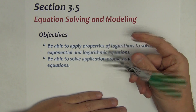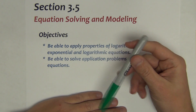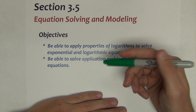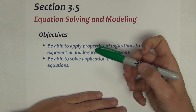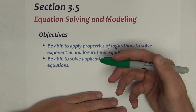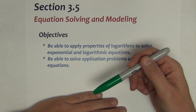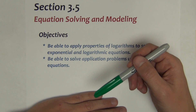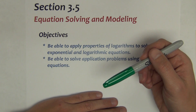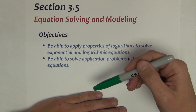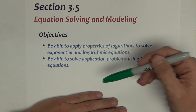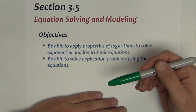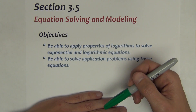Section 3.5 is the last section of Chapter 3 we're going to cover this year. It's titled Equation Solving and Modeling. Specifically, we're going to look at how to solve exponential equations and logarithmic equations. Now that we've got the mathematics to solve them — logarithms being the key — we'll go over how to solve a variety of those equations so we can do those mathematical modeling problems with algebra instead of graphing calculators.